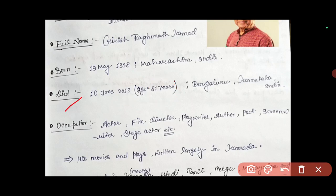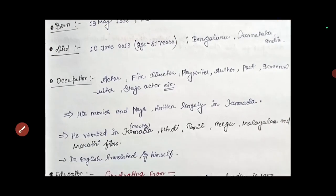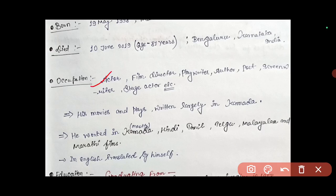His death occurred in Bangalore, Karnataka. His occupations were actor, film director, playwright, author, poet, screenwriter, stage designer, and stage actor. He worked in multiple stages - he wrote works and did acting.